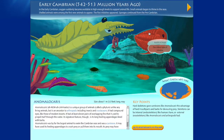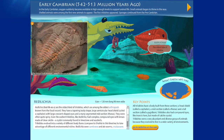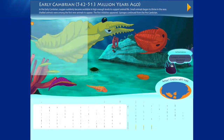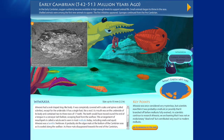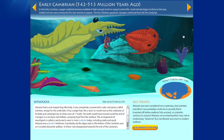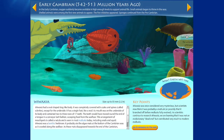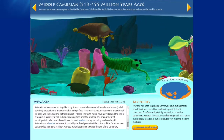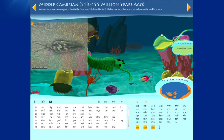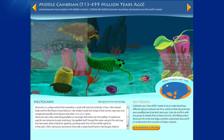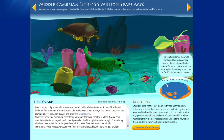By hovering over each one we can see their name. By clicking on them we can view more information about them as well as a fossil photo. Moving the mouse at the edges of the screen we can scroll backwards and forwards in time.